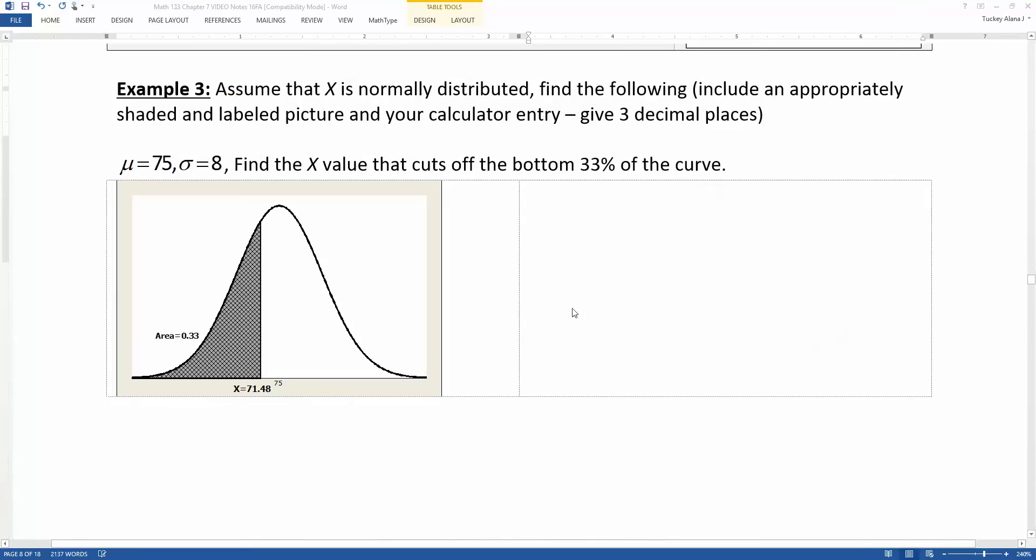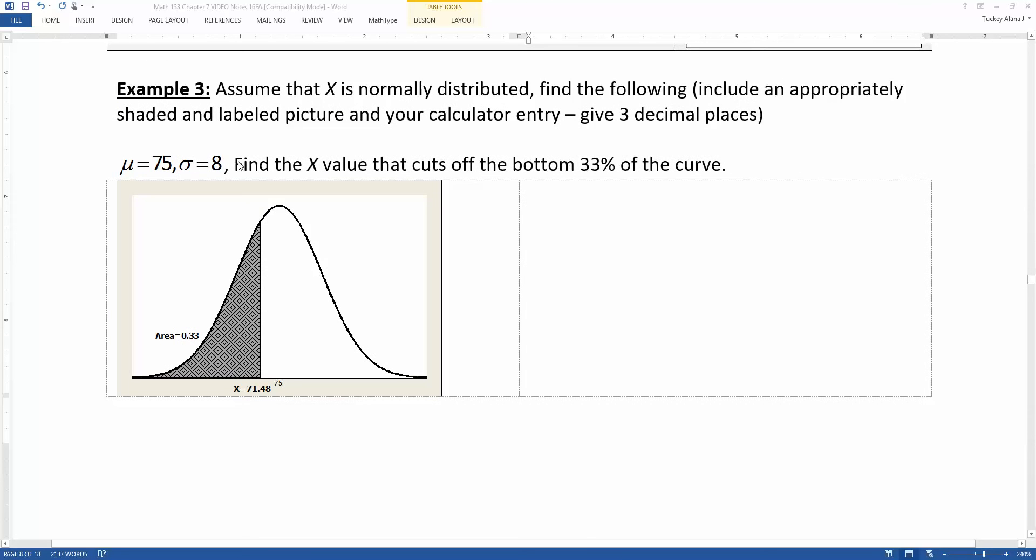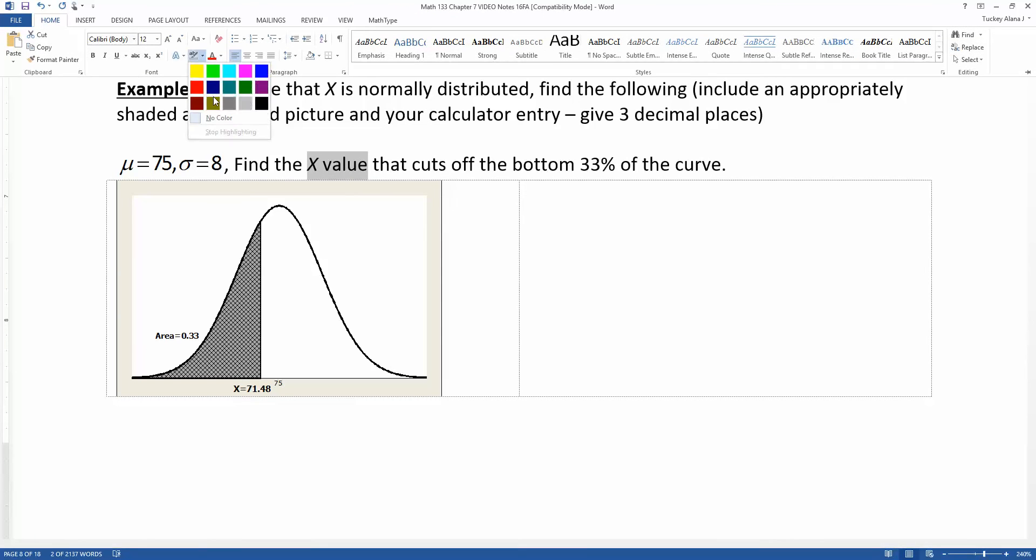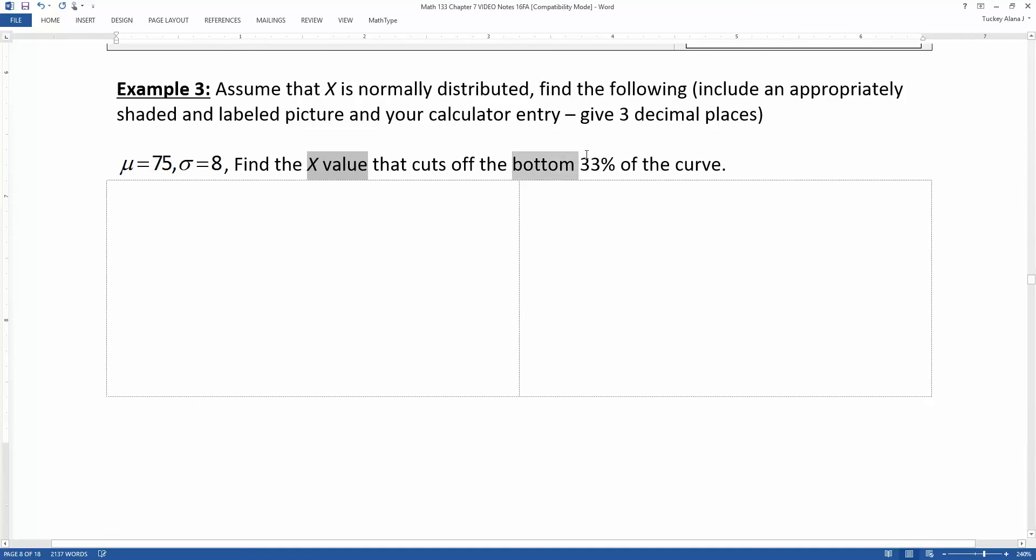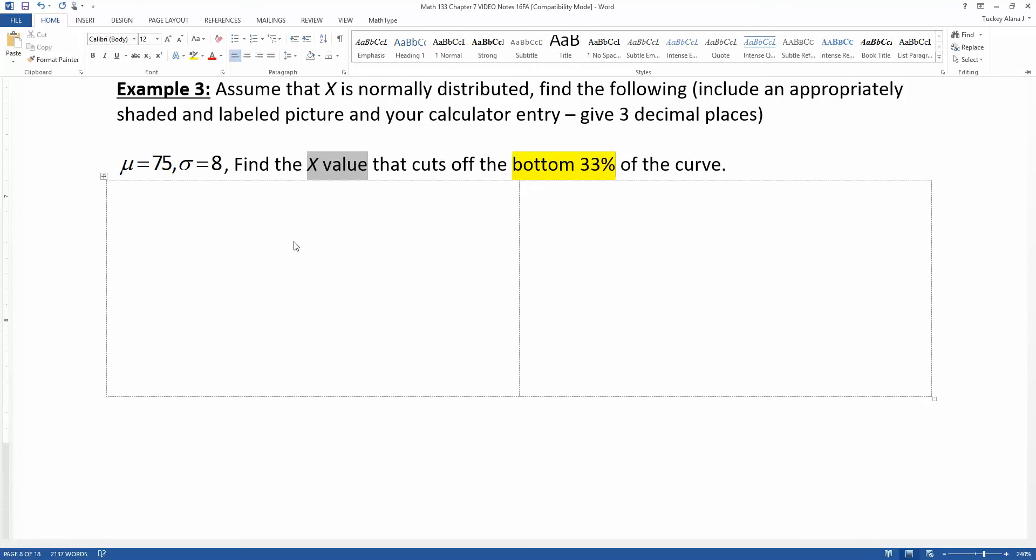Let's see an example. Assume that x is normally distributed with a mean of 75 and a sigma standard deviation of 8. We're going to find the x value that cuts off the bottom 33 percent. So I'm asking for an x value right there, and I'm giving you an area. I'm giving you the area that's in the bottom percentage of this curve and I've already shaded and drawn it. So I know that the area is 0.33 and I'm looking for where this x-bar is, and we technically don't know at this point 71.4.